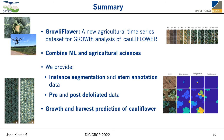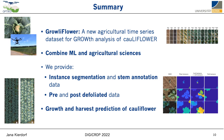In summary, we provide a new time series dataset for growth analysis of cauliflower, which we call Growliflower. With this dataset, we want to combine the world of machine learning with agricultural sciences, and to do that, we additionally provide instance segmentation and stem annotation data to address the topic of growth and harvest prediction of cauliflower. To get more insights into the growth, we also provide pre- and post-defoliated images of plants.